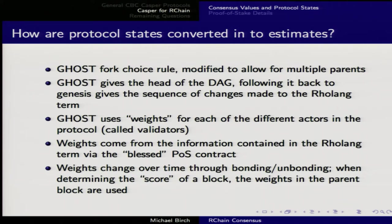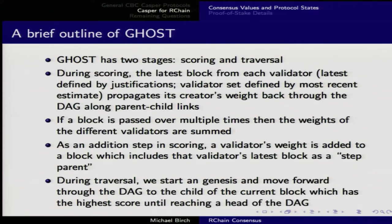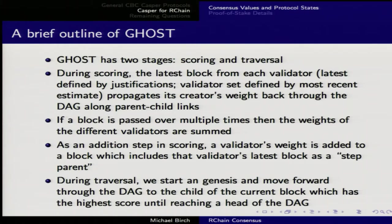Weights change over time through bonding and unbonding. When determining the score of a block, weights in the parent block are used. There are two stages to the GHOST algorithm. During scoring, the latest block from each validator — where 'latest' is defined by the justifications — is the stuff at the end of the graph where new things can be attached.